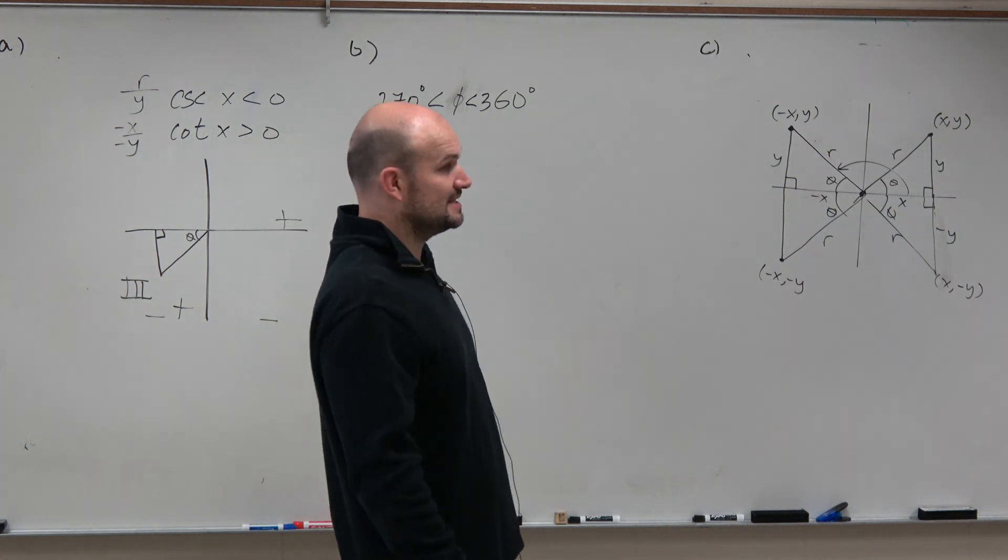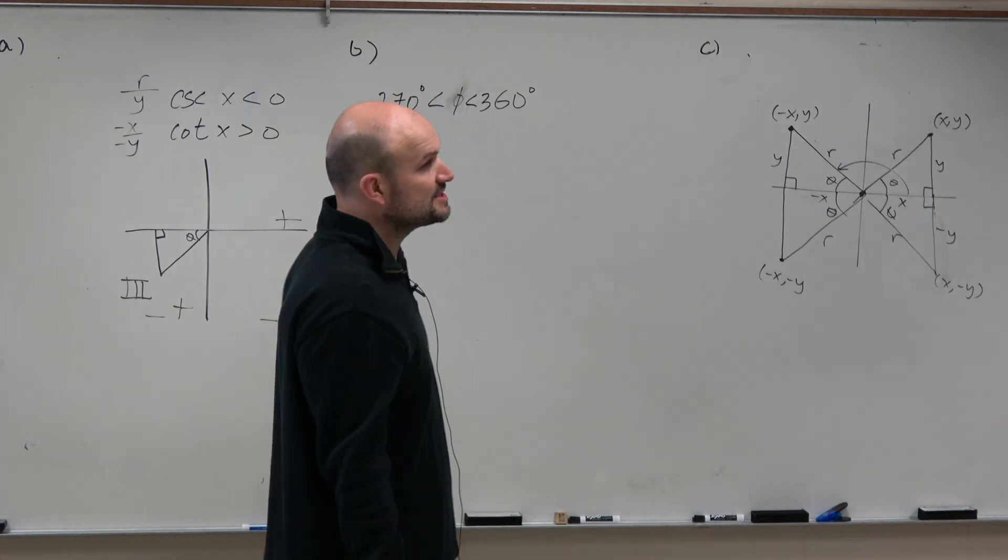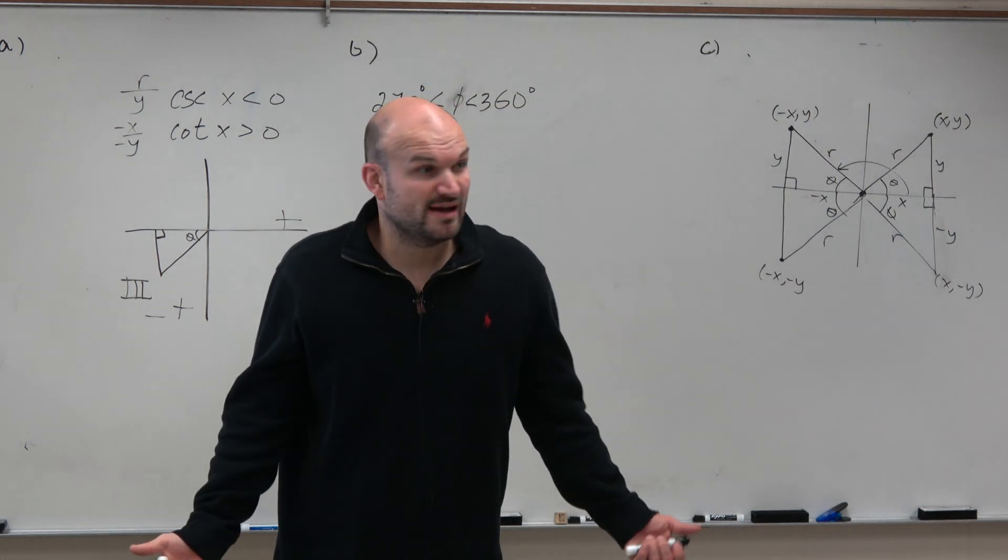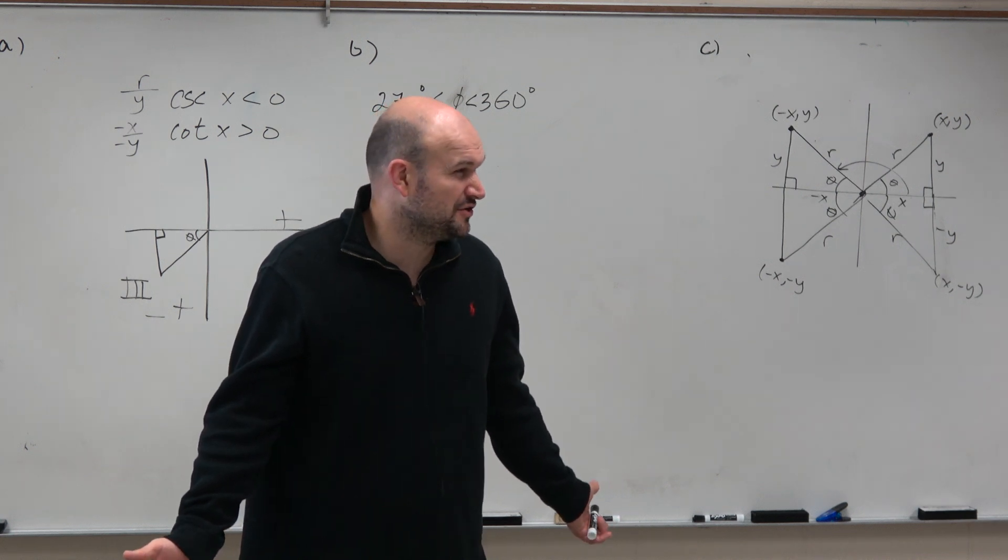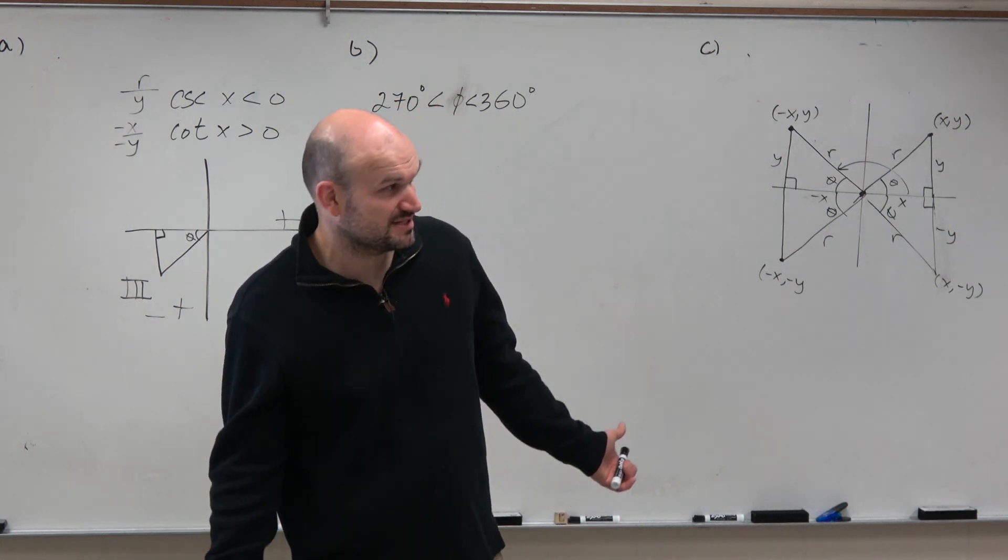OK, so we have 270 degrees is less than something I've never seen before, which is less than 360. So we haven't used this symbol yet. Should we just say we don't know what the symbol is, so we don't know how to do it, and we should just leave it blank and skip it?